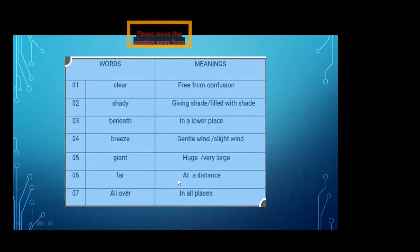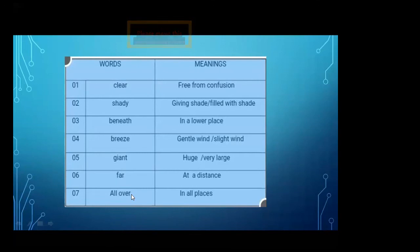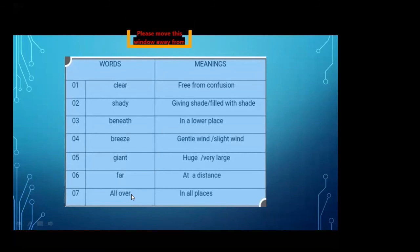The sixth word is far — F-A-R. Far means at a distance, something which is not near to you. You may have relatives who live at a distance — who are far away. The seventh word is all over — A-L-L O-V-E-R. All over means in all places, meaning everywhere. Take a screenshot of the word meanings because you will have to write them in your English midterm fair copy.